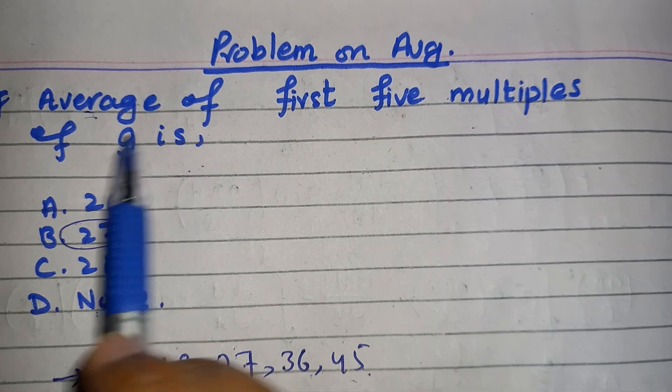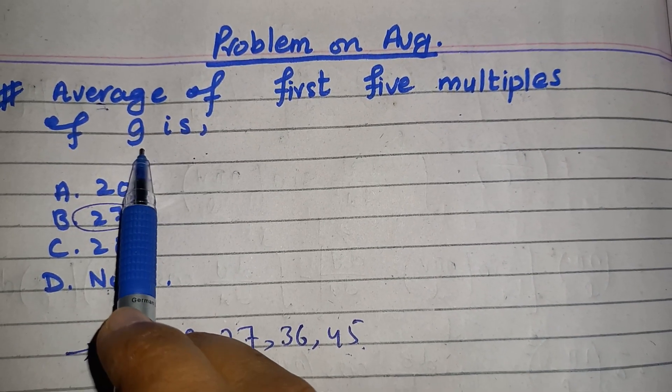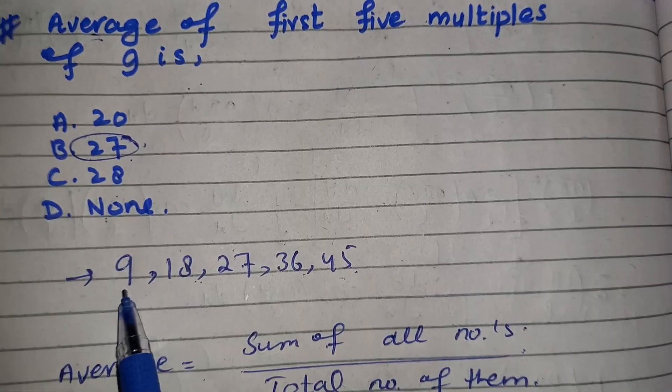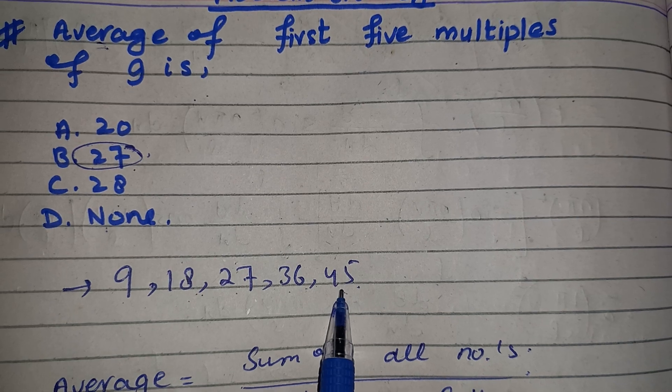Now, the average of first five multiples of nine means you have to read the table of nine till five: nine ones are 9, nine twos are 18, nine threes are 27, nine fours are 36, and nine fives are 45. These are the first five multiples of nine.